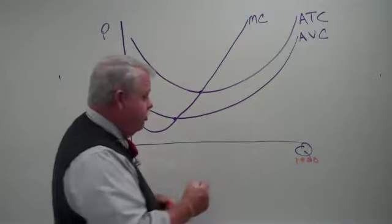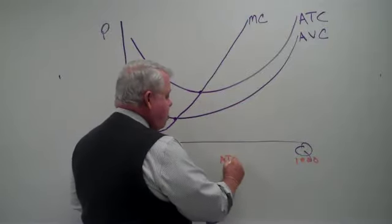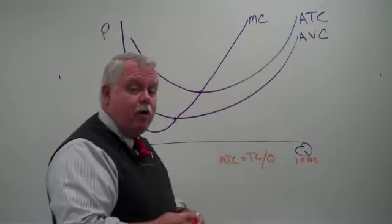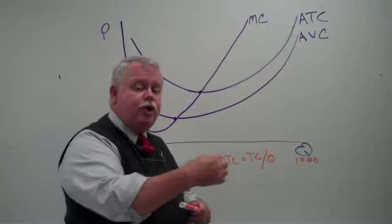Now, what is average total cost? Average total cost is simply total cost per unit, or divided by quantity. It's the average cost for each unit.